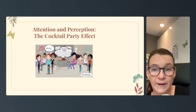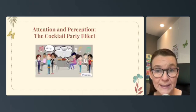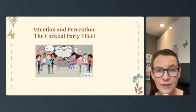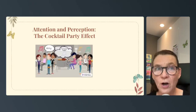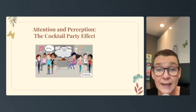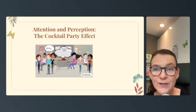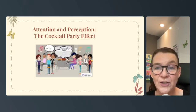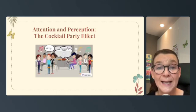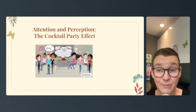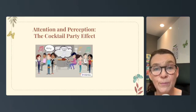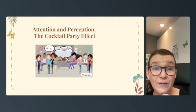The cocktail party effect is the ability to focus on a single conversation in a noisy environment. It demonstrates selective attention, where the brain filters out irrelevant stimuli. Imagine you're at a crowded party with music playing and conversations all around you. Despite the background noise, you can follow a conversation with a friend next to you. However, as soon as someone across the room says your name, your attention shifts immediately. This illustrates the brain's ability to filter background noise and selectively focus on information deemed important, like your name, while ignoring other irrelevant stimuli.